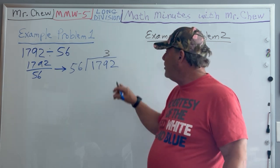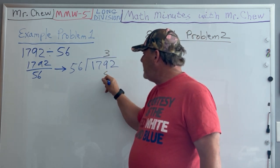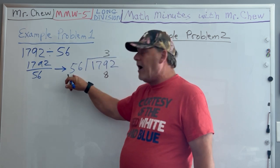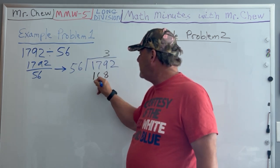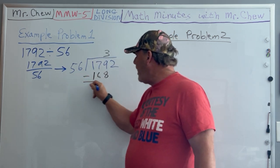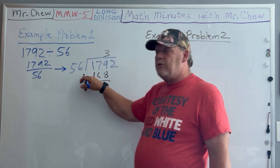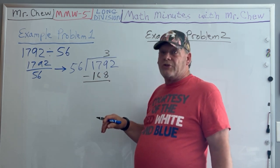If I put a four there and multiply, it's gonna be too big, but it's gonna be three. Three times six is 18, carry the one. Three times five is 15 plus one is 16.